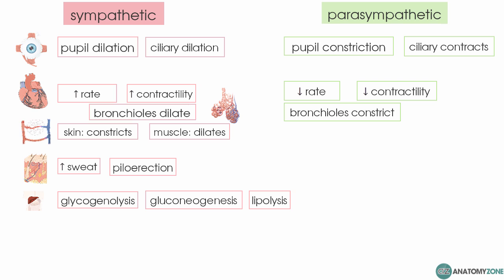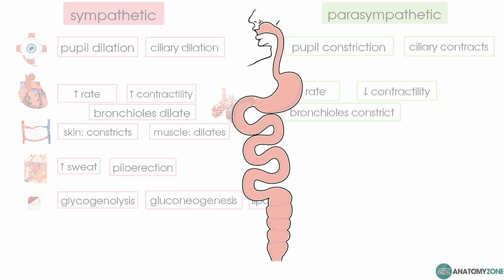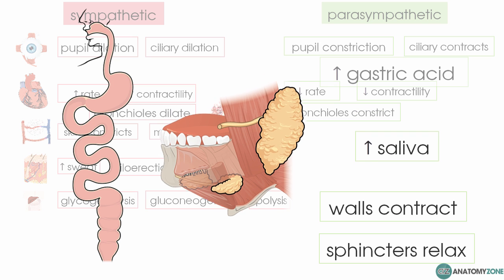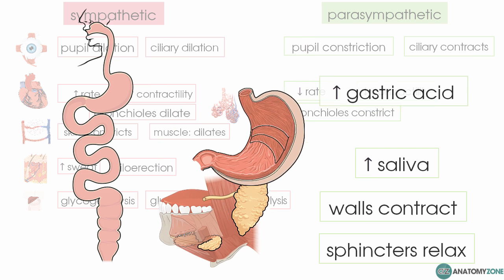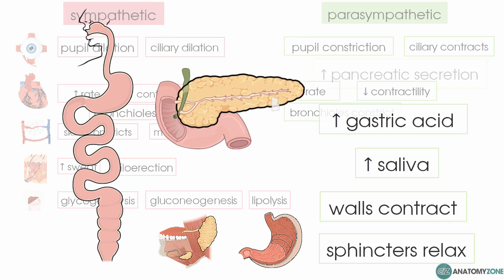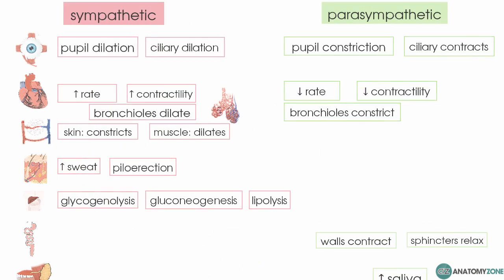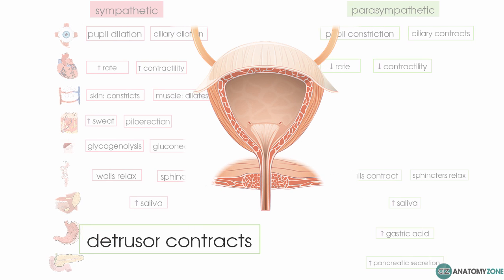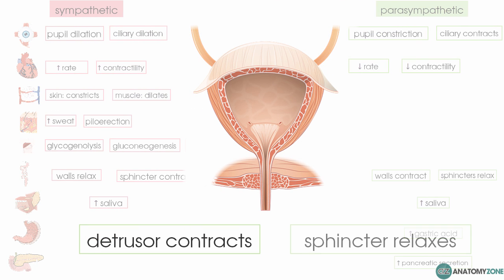The parasympathetic, in terms of its rest and digest function, does the opposite. In terms of the GI tract, it causes the smooth muscle walls of the digestive tract to contract and the sphincters to relax. You get increased saliva secretion, increased gastric acid secretion, and increased pancreatic secretions. For the bladder, you get detrusor muscle contraction and relaxation of the sphincter.